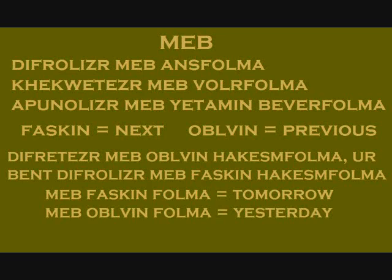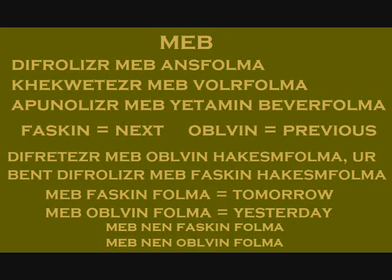Faskin is used for days next week and obelvin for days last week. For example, 'diffreteser meb obelvin hakesem folma ur bent difroliser meb faskin hakesem folma' means it snowed last Tuesday and it will also snow next Tuesday. You can also say 'meb faskin folma' for tomorrow or 'meb obelvin folma' for yesterday. 'Meb nen faskin folma' means the day after a specific day, not necessarily today, and similarly for 'meb nen obelvin folma.'